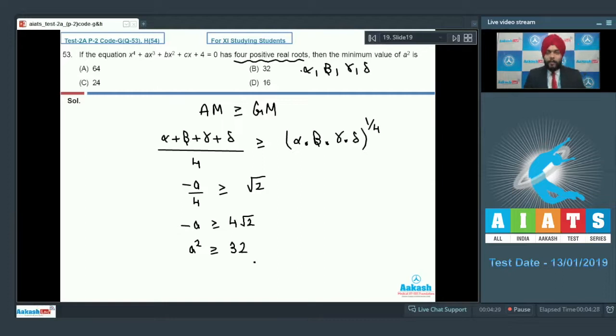So minus A greater than equal to 4 root 2. Squaring both sides, I can say that A square greater than equal to 32. So the minimum value of A square is 32. Option number B is correct. Very simple problem.